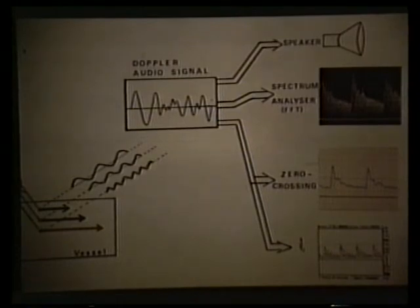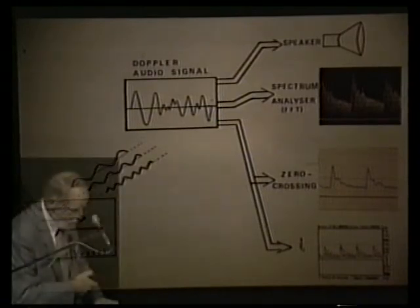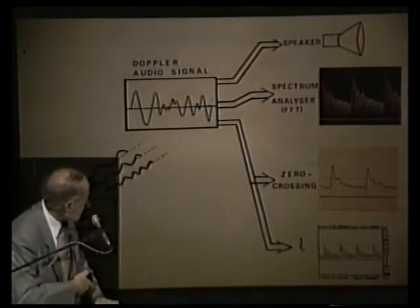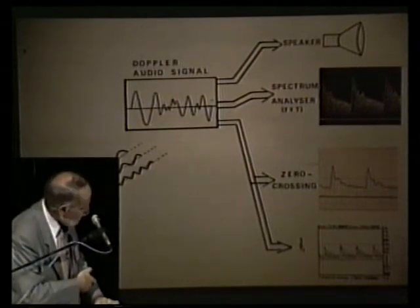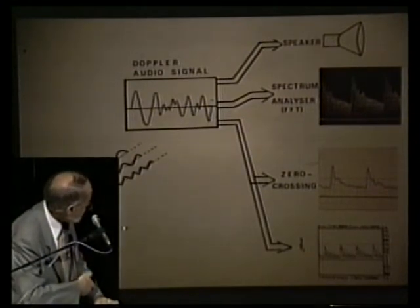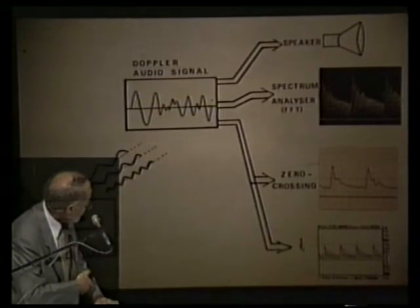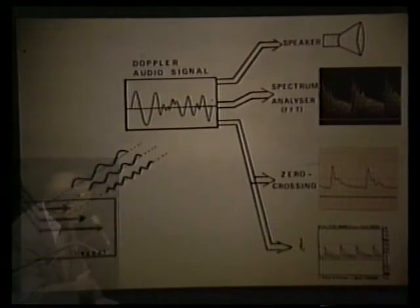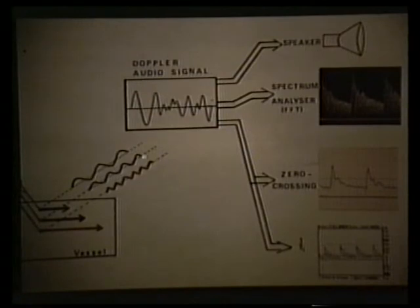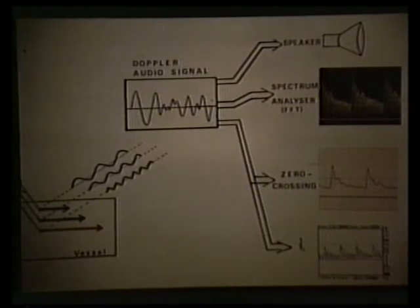In fact, flow velocity is not homogeneous — blood flows more rapidly in the center of the vessel than along the walls. The final Doppler signal is therefore a combination of Doppler signals corresponding to the different Doppler shifts due to these different velocities, resulting in a spectrum of velocities.